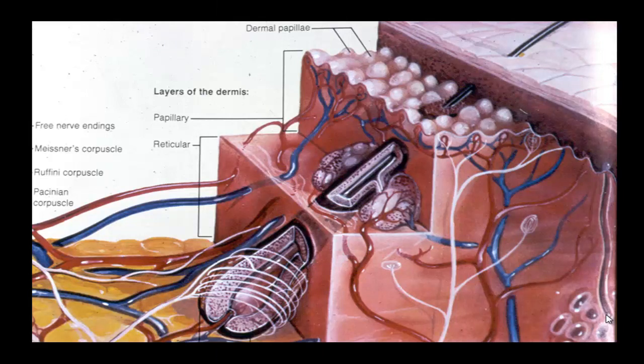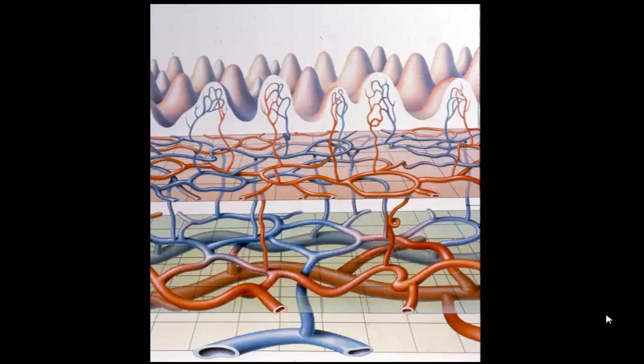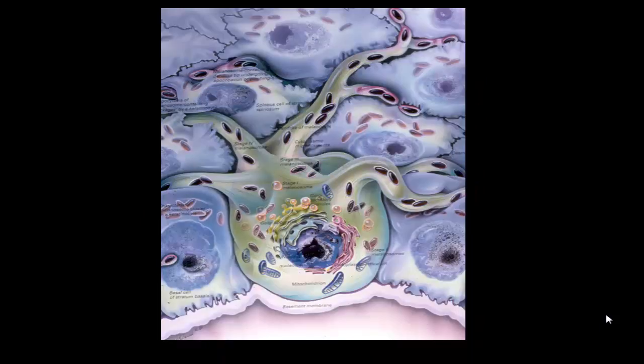Again, stratum corneum, epidermis, dermis with these dermal papillae increasing the interface between the epidermis and dermis. Then you have all the support structures — hair, eccrine glands, nerves, sebaceous glands, blood vessels, all coursing through the dermis. One big important actor is the melanocyte, which gives pigment to the skin. They produce pigment granules called melanosomes and feed those to the keratinocytes. Darker skin types don't necessarily have more melanocytes, but they have melanocytes that produce more mature melanosomes, giving a darker color and more photo protection.